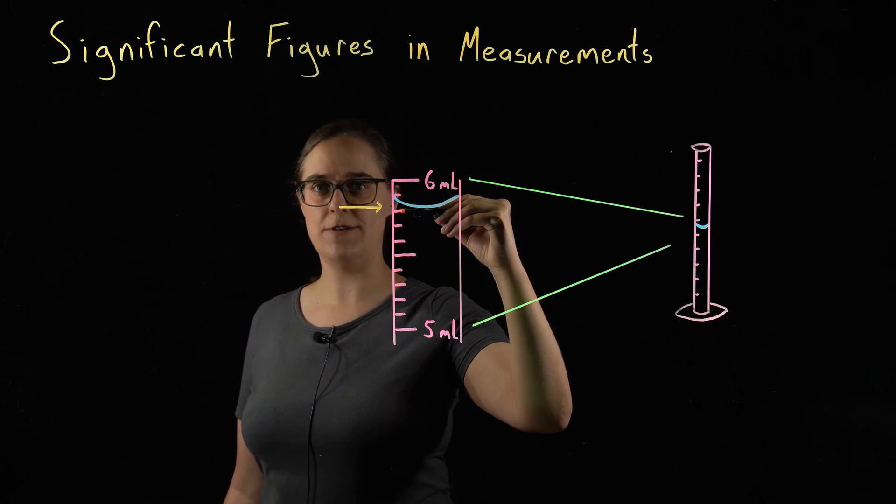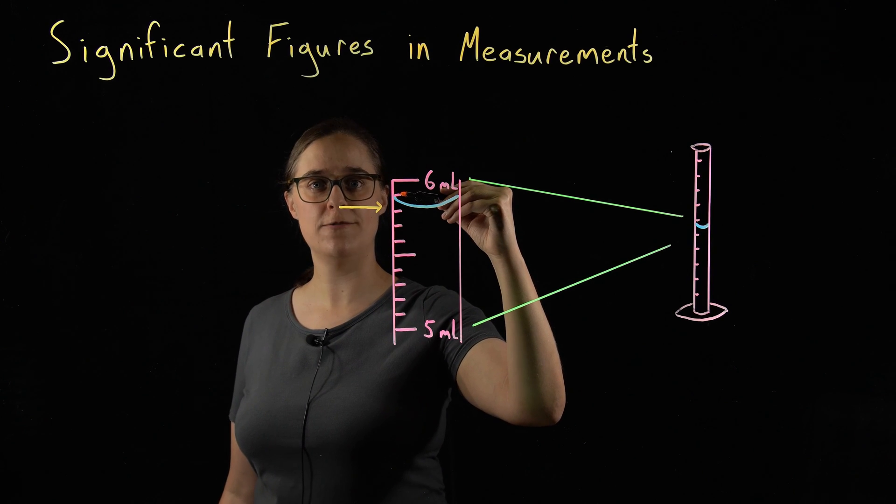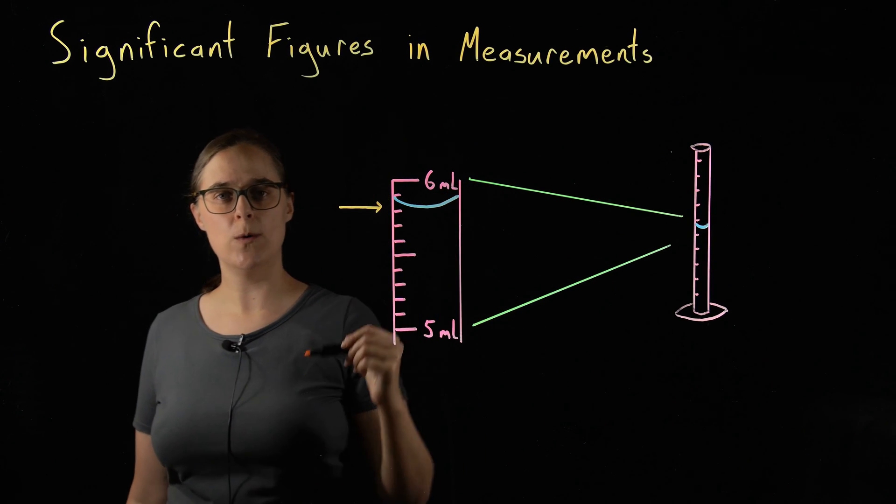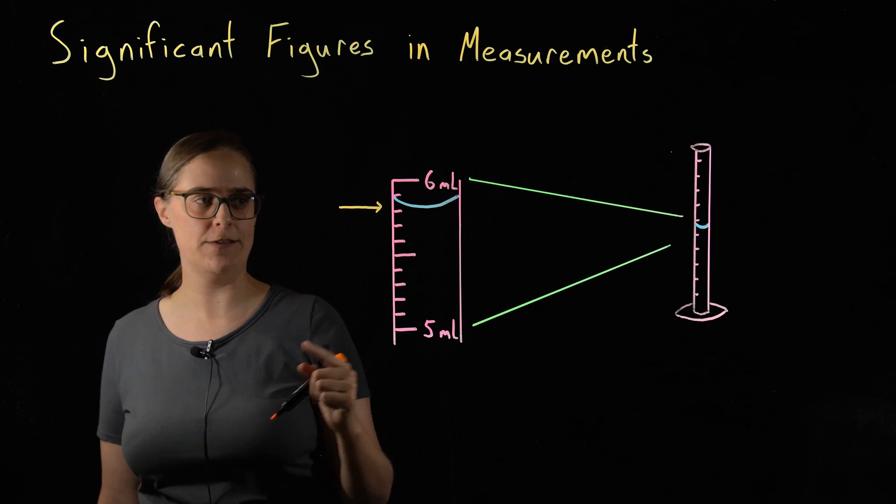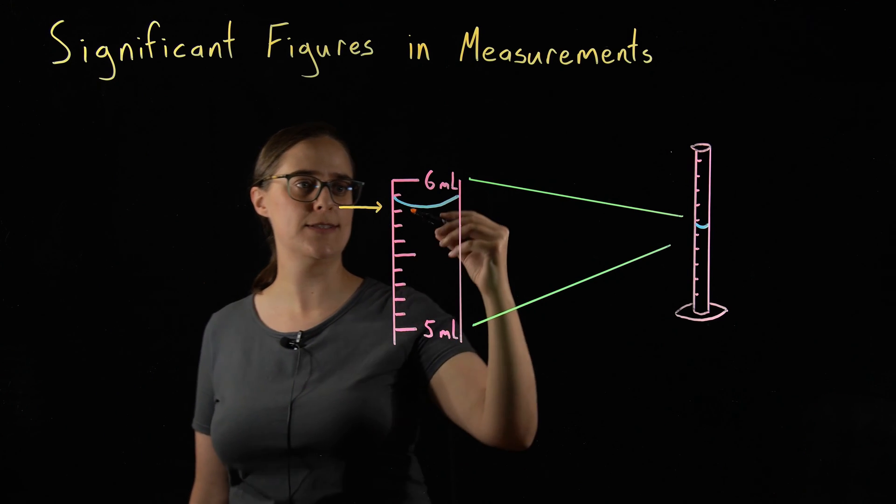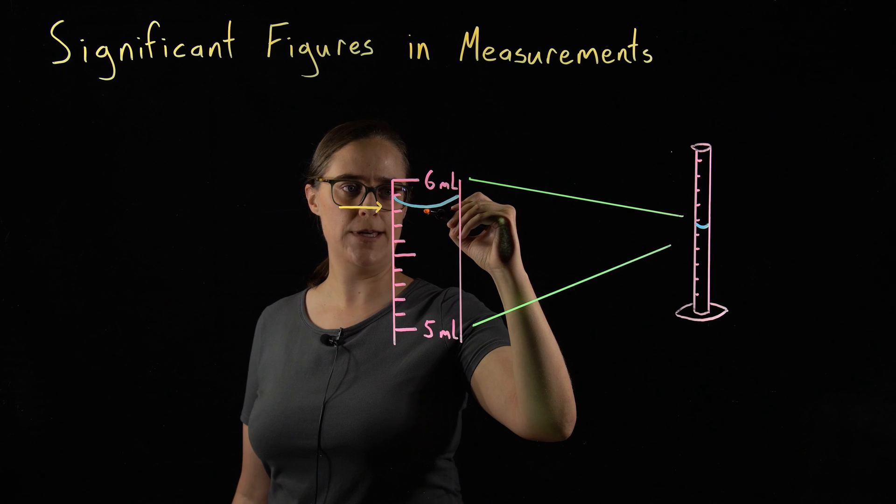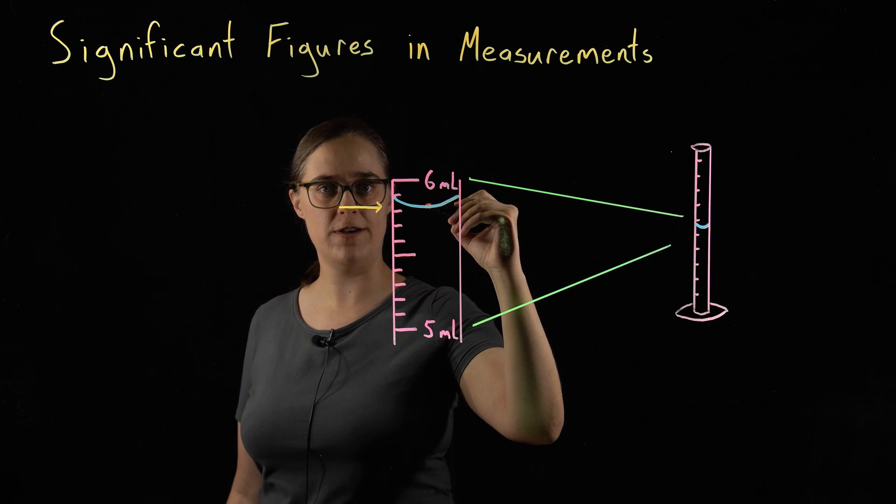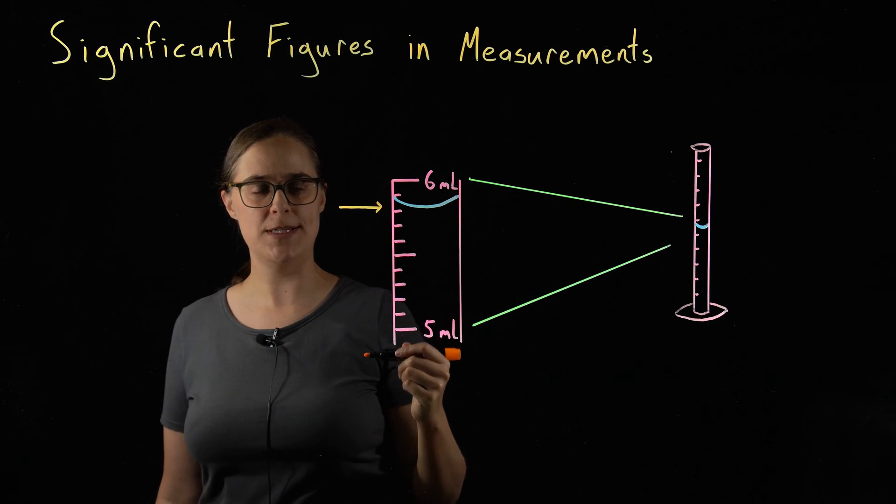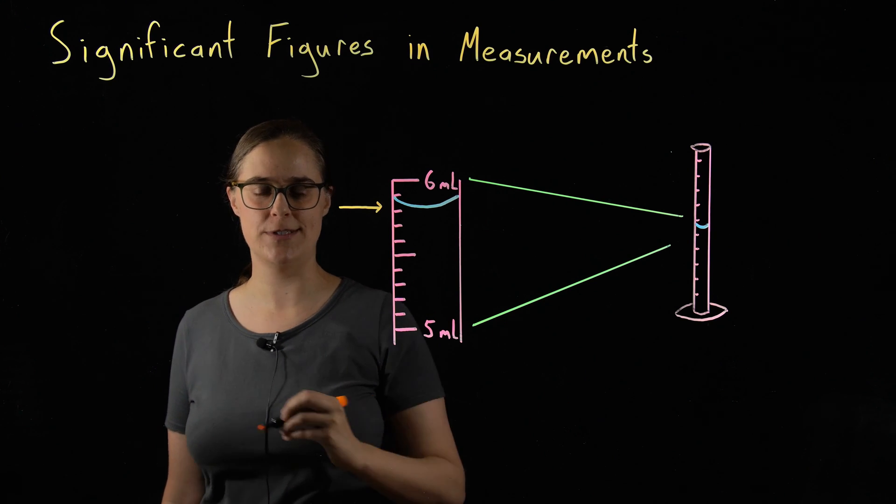So this line is 5.8 milliliters. This is 5.9. We always need to estimate one more significant figure than there are gradations. So if this is 5.8, this is slightly above 5.8. My estimate is going to be 5.83 milliliters.